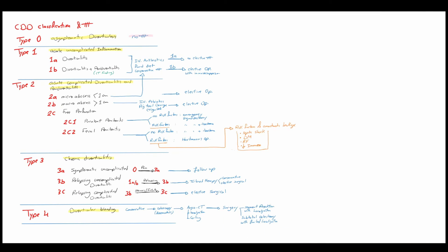Type 3, chronic diverticulitis, follow-up in asymptomatic cases, elective surgical treatment in complicated and relapsing cases. Type 4, diverticular bleeding, conservative treatment, interventional treatment, and if failed, surgical treatment.